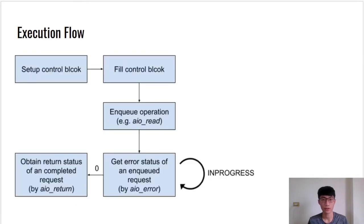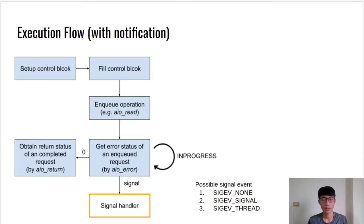Generally speaking, the execution path of an application using POSIX AIO is similar. In the first step, users need to allocate an asynchronous I/O control block. After allocation, fill in the detailed information of the I/O request into the control block — for example, if a read operation will be enqueued, the user must provide the target file, file offset, location of buffer, and length to be transferred. After filling data into the control block, the user can submit the operation. After submission, the user is responsible for checking the status of the issued request. Using aio_suspend, the user can obtain the status. The procedure must block until the requests are completed. If the result is returned, the user can obtain the result by aio_return. Besides busy-waiting, POSIX AIO also provides a mechanism to notify the user by signal. After receiving the signal, the signal handler defined by the user is triggered.